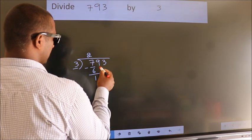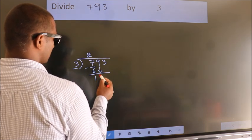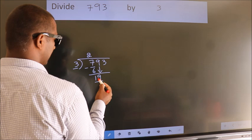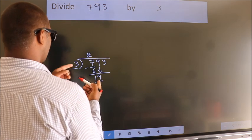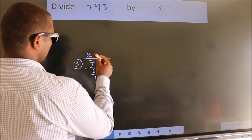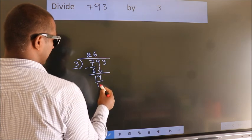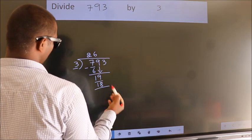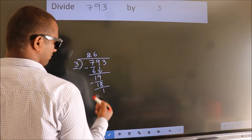After this, bring down the beside number. So, 9 down. So, 19. A number close to 19 in 3 table is 3 6 18. Now, we subtract. We get 1.